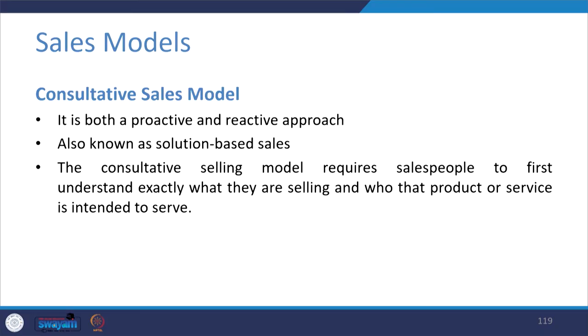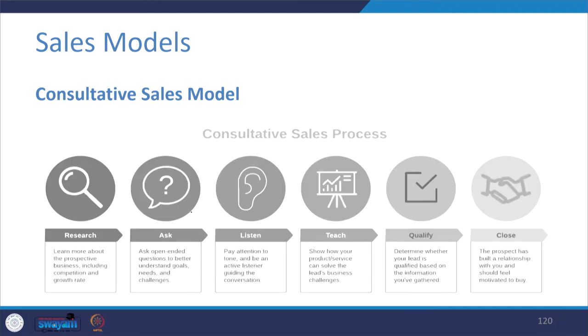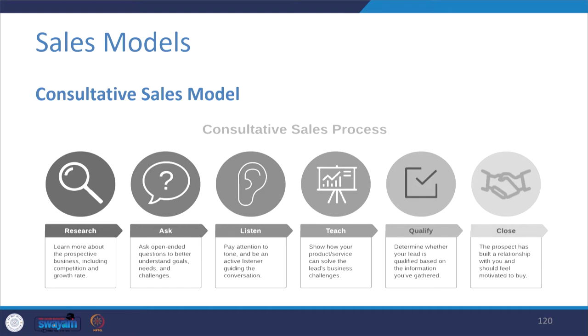The first sales model is the consultative sales model — it is both a proactive and reactive approach. You do homework before meeting the client, and it is also known as solution-based sales. You know that a particular buyer is facing some issues and your product or service is the best solution for that problem. The consultative selling model requires salespeople to first understand exactly what they are selling and who it is intended to serve. It generally follows a 6-step process: research, ask, listen, teach, qualify, and then close the deal.